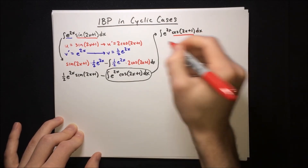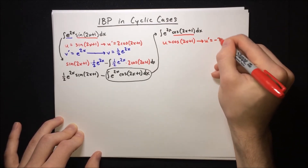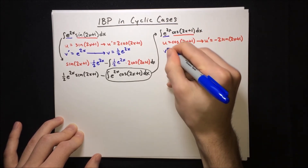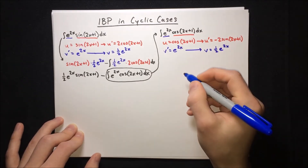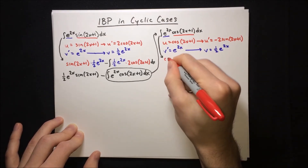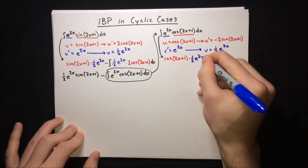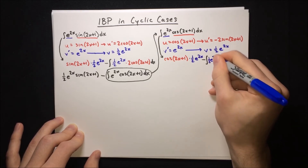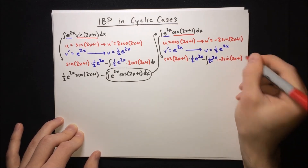For the second round, u equals cos(2x + 1), so u prime equals negative 2 sine(2x + 1). Then v prime equals e to the 2x, so v equals half e to the 2x. Applying integration by parts, we get cosine(2x + 1) times half e to the 2x minus the integral of half e to the 2x times negative 2 sine(2x + 1) dx.